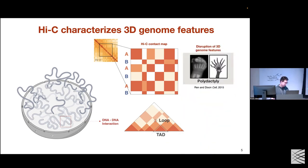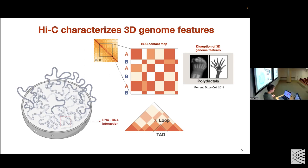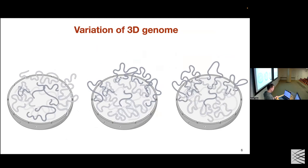These 3D genome features contribute largely to the regulation of gene transcription activity — deciding what genes to express and the amount of gene expression, which ultimately affects cell type. Disruption of 3D genome features leads to phenotypical changes or even human disease. One example shown here is that a change in TAD structure leads to a change in the number of fingers. Getting back to the question of why the same DNA results in different cell types, one major contributor is the variation of 3D genome structures across different cells.